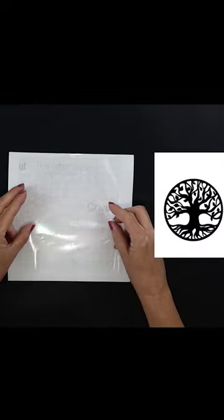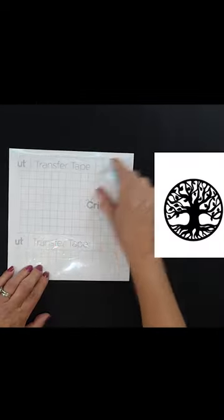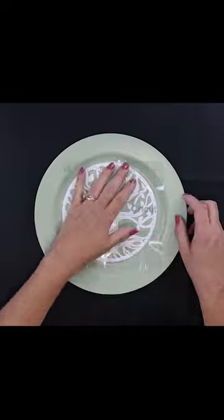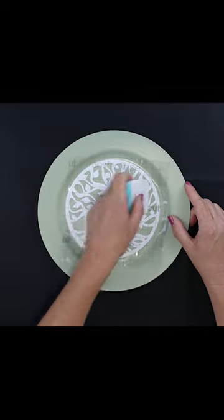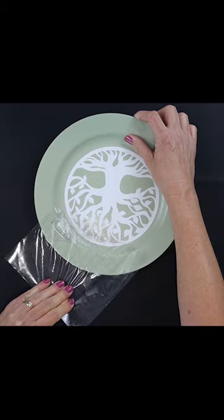Then I'm going to use a decal that I found on Cricut Design Space. Once that Mod Podge has dried, we're going to attach that decal directly to the center of our painted plate.